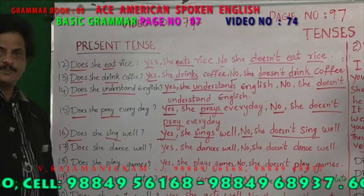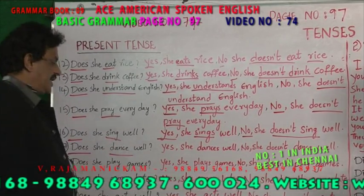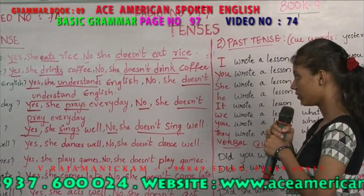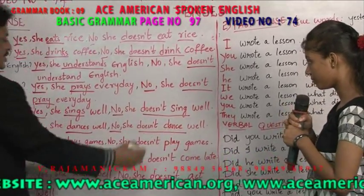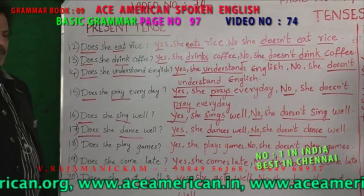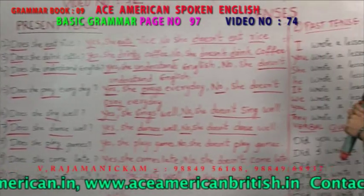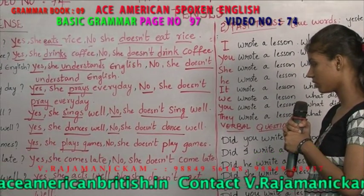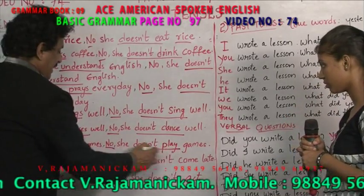Seventeenth question: does she dance well? Does and dance are present tense. Yes, she dances well. No, she doesn't dance well — also in present tense. Eighteenth: does she play games? Does and play are present tense. Yes, she plays games. No, she doesn't play games.